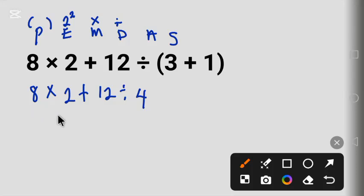Plus 12 divided by 4. 12 divided by 4 is 3. So bring down this 16 plus 12 divided by 4 is 3.